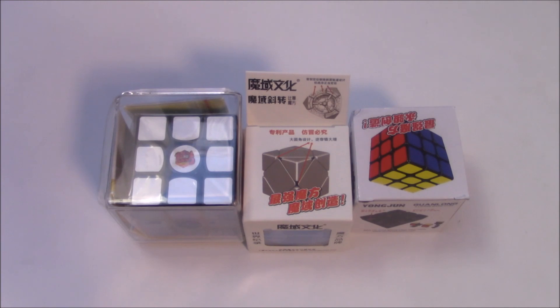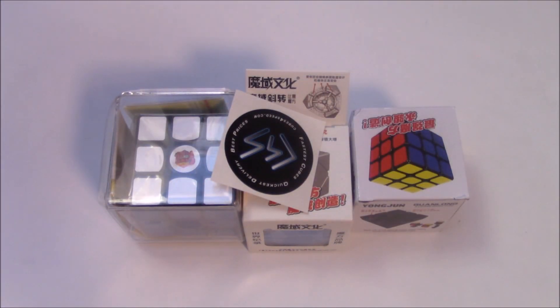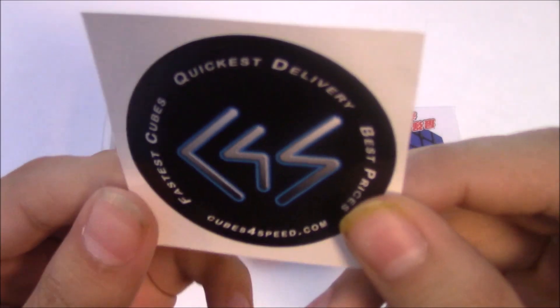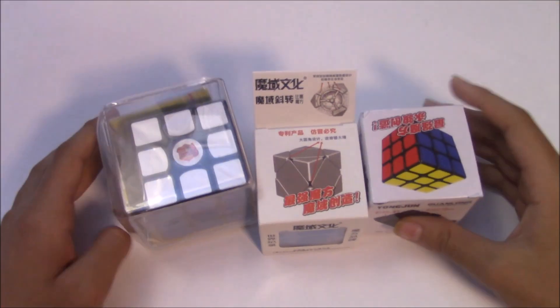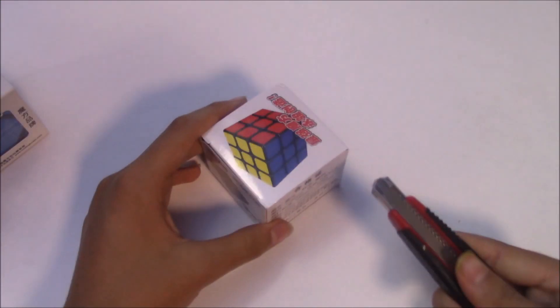Just a receipt and some cubes4speed stickers, which is pretty nice. That's all that was in the package. And here are the three puzzles. So let's get into the Guanlong first—that's the least exciting.